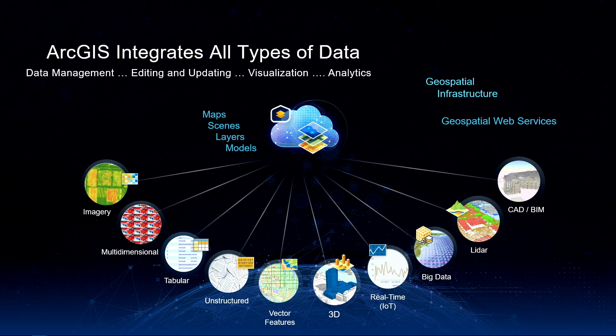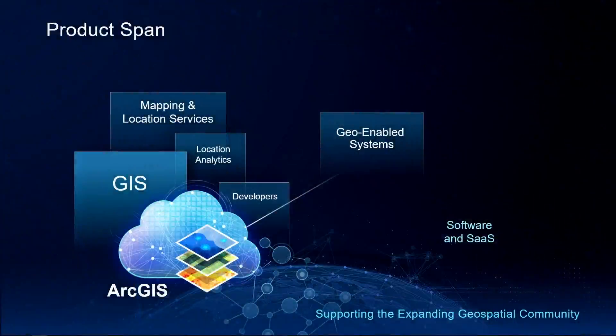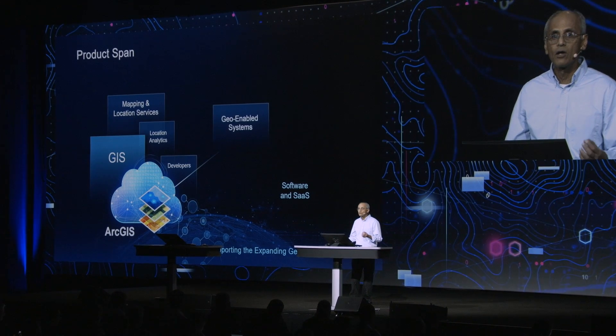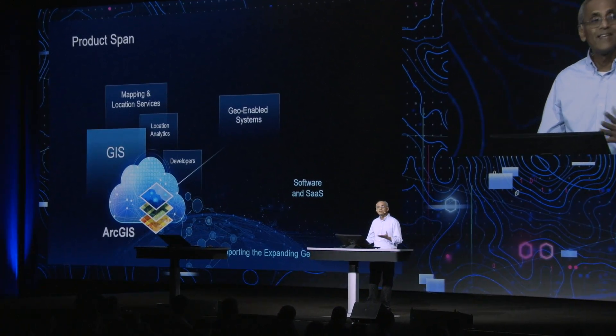It abstracts all of these data into layers to create a common language of maps and scenes, models and tools that can be used by creators and analysts, as well as to power applications. Our goal with the ArcGIS product suite is to serve the GIS community, as well as the growing need for mapping and location services and location analytics. The product suite also includes a select set of independent solutions that we call geo-enabled systems. These work with your GIS, but they are focused solutions that are independent of GIS.